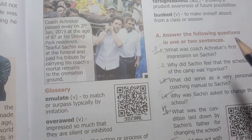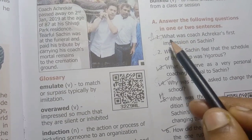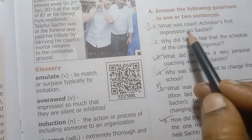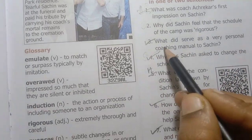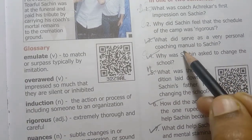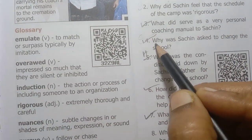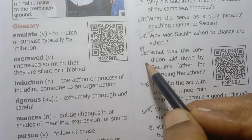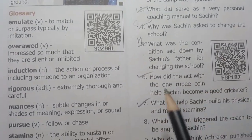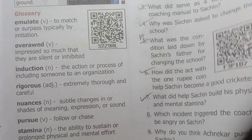Page number 5. Answer the following questions in one or two sentences. First one: what was Coach Achrekar's first impression on Sachin? That is a half-yearly question. What served as a very personal coaching manual to Sachin? Fourth one is an important question. Fifth one is a half-yearly question. Sixth one and seventh one are important questions.